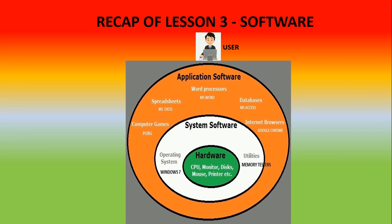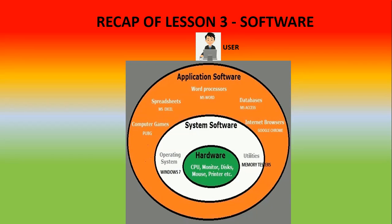Now if you remember this diagram, we discussed it in lesson number 3. The innermost circle, the green part, represents hardware — CPU, monitor, disk, mouse, printer etc. Hardware are the physical parts of the computer which can be touched. In the white area of the circle it is written system software, which are programs used to run the hardware. There are two types: operating system and utilities.